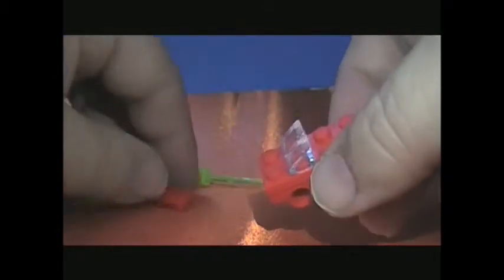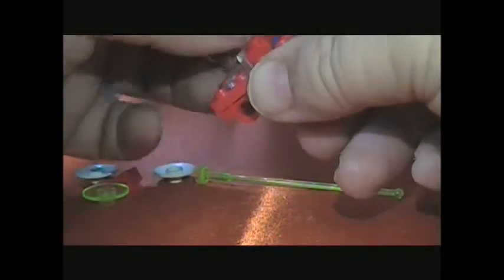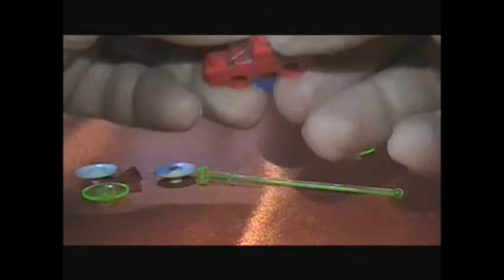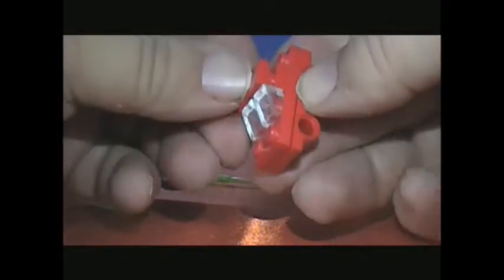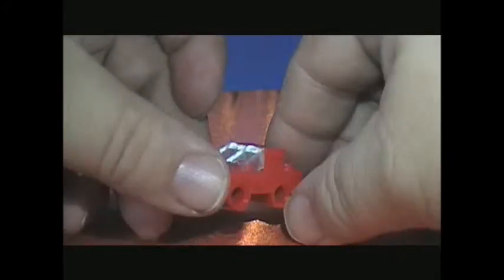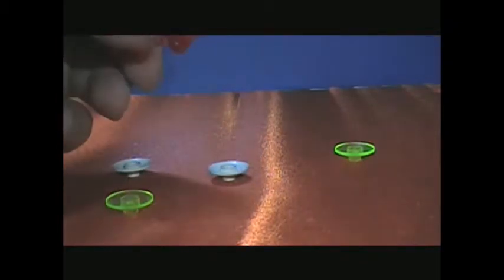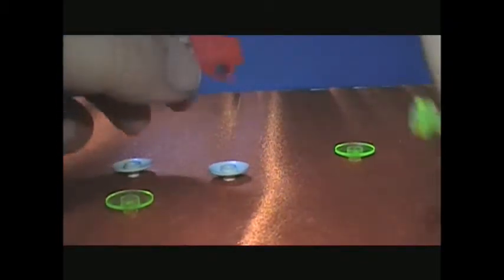You then add a 1x2 plate. And then a 1x2 tile. You then add your 1x1 slope. And then your antenna.